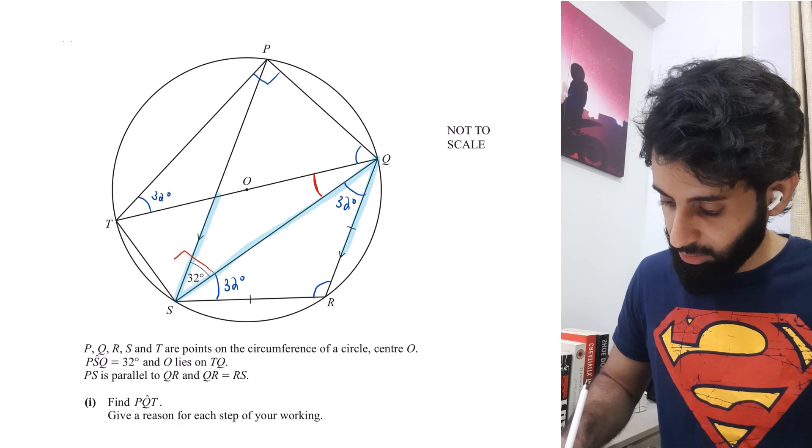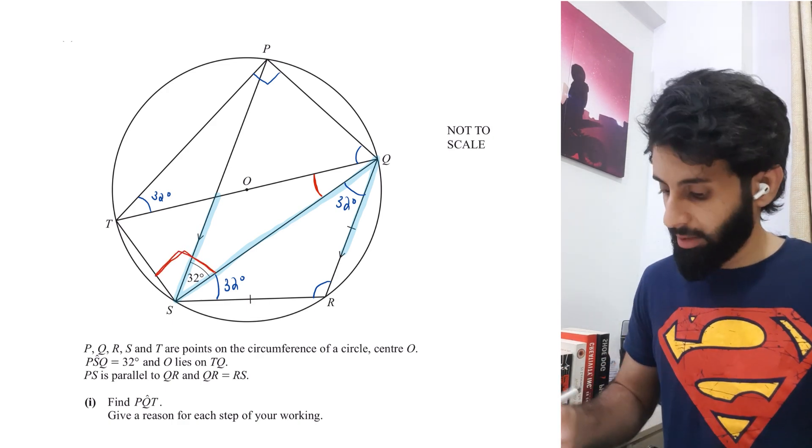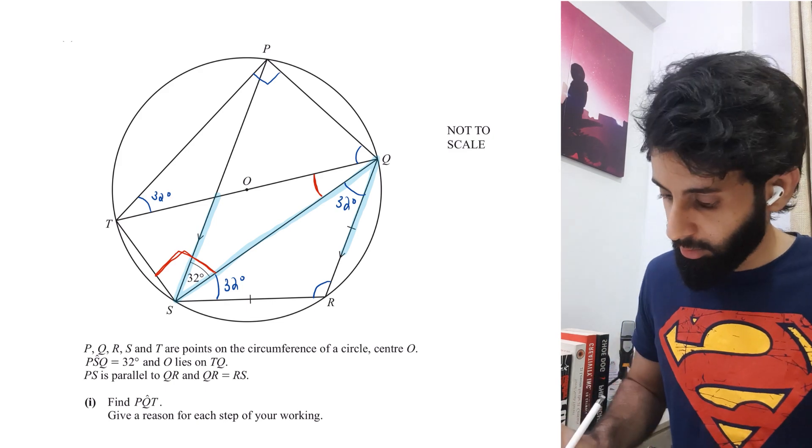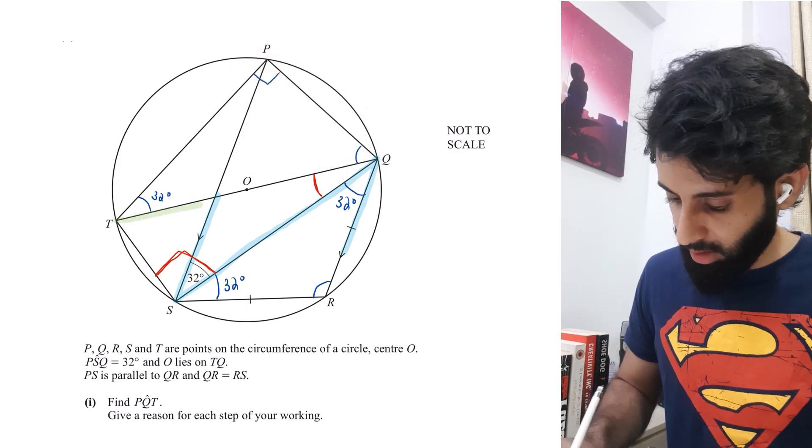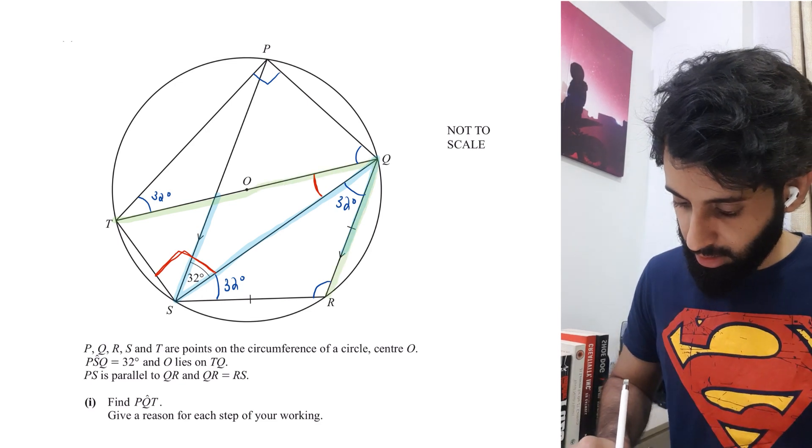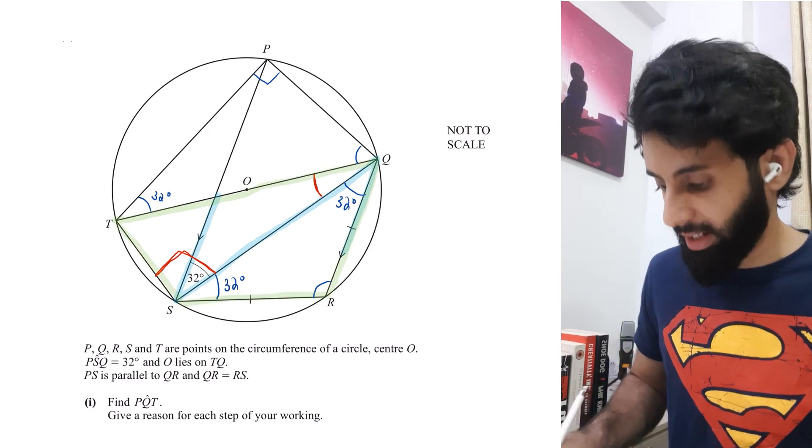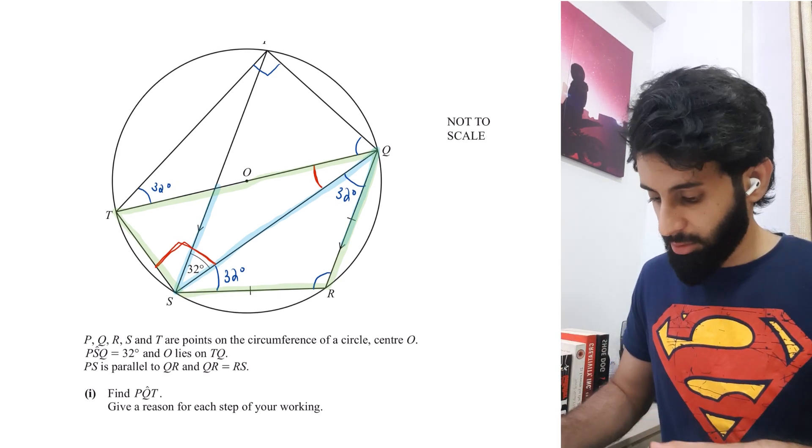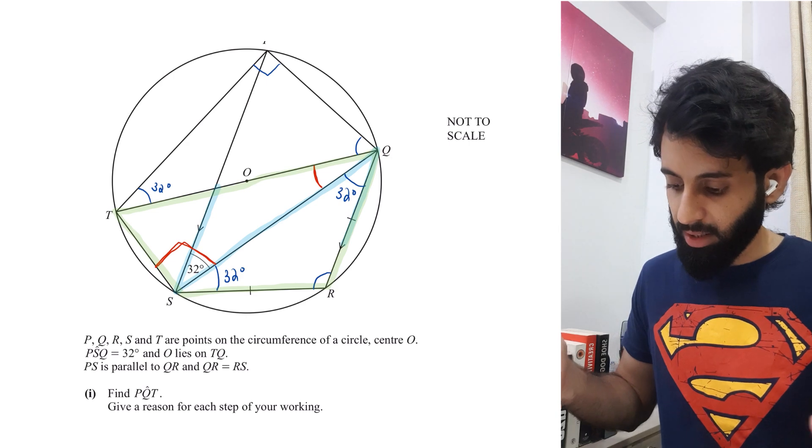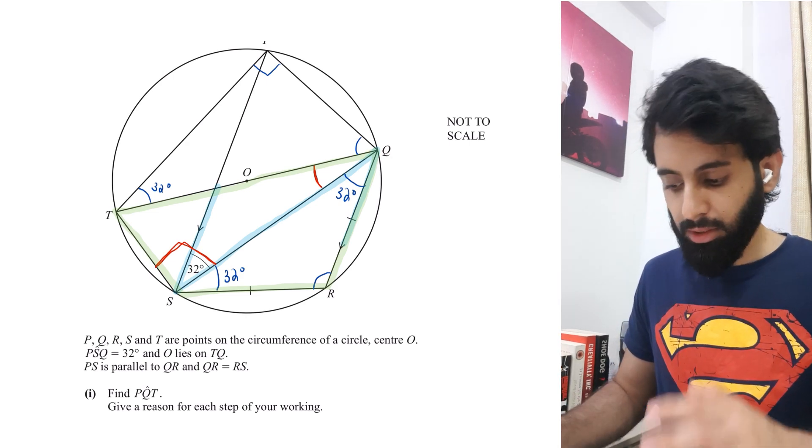This angle is going to be 90 degrees because it's opposite the diameter. If you notice, TQRS is basically a cyclic quadrilateral. You don't have to use this property - it's just what clicked to me instantly. I'm sure there may be another property we can use here.